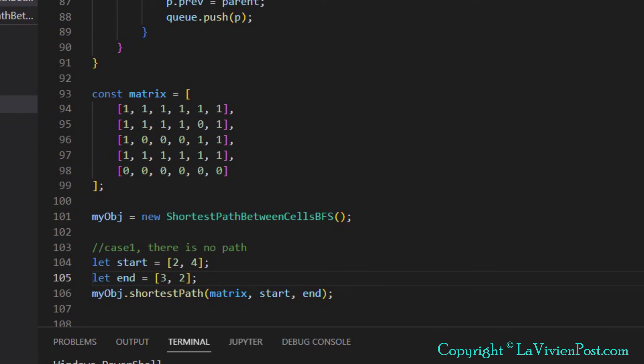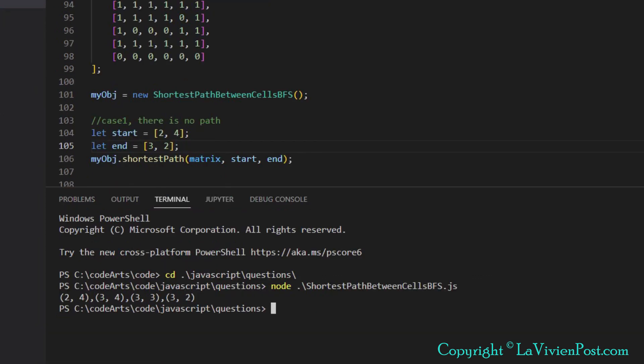Now we run the second case. The direction is from upper right to lower left. The start cell is 2,4 and the end cell is 3,2. BFS returns this.